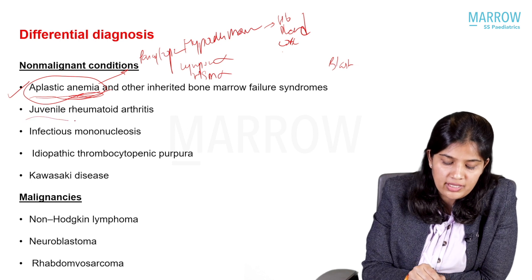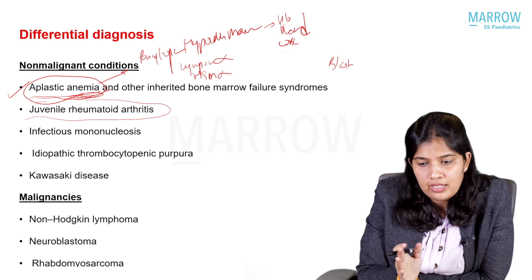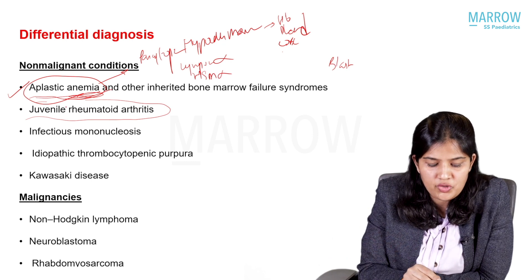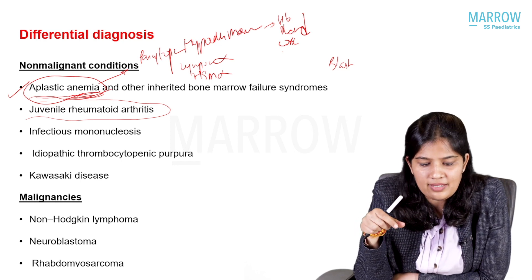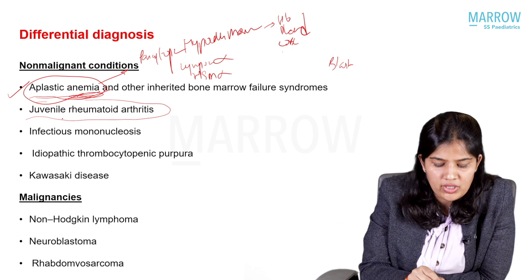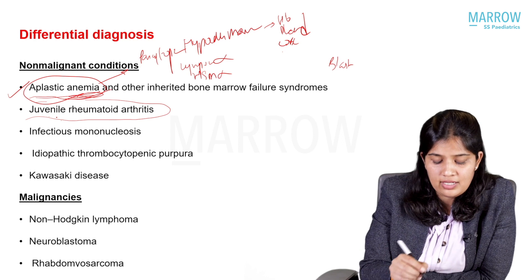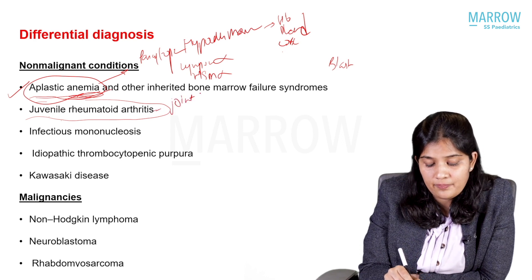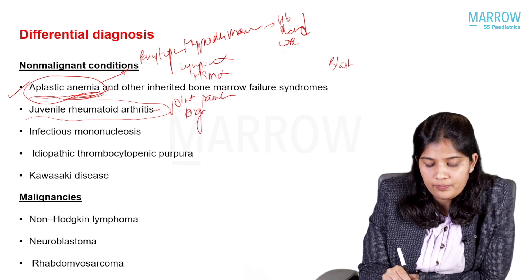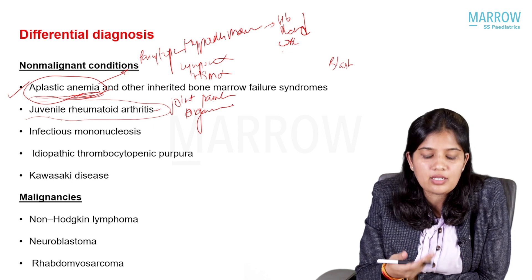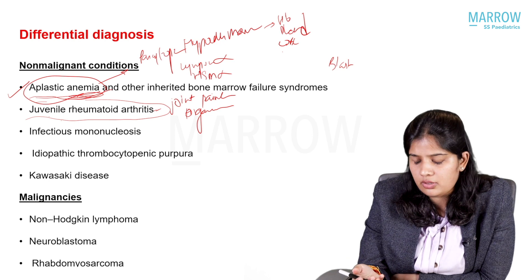Juvenile rheumatoid arthritis (JIA) is also a very close differential diagnosis. Patients with leukemia presenting with bony pains are often mistaken for JIA. However, in juvenile idiopathic arthritis, patients mainly have joint pains and will not have organomegaly — except in systemic JIA — as compared to patients who present with leukemia.